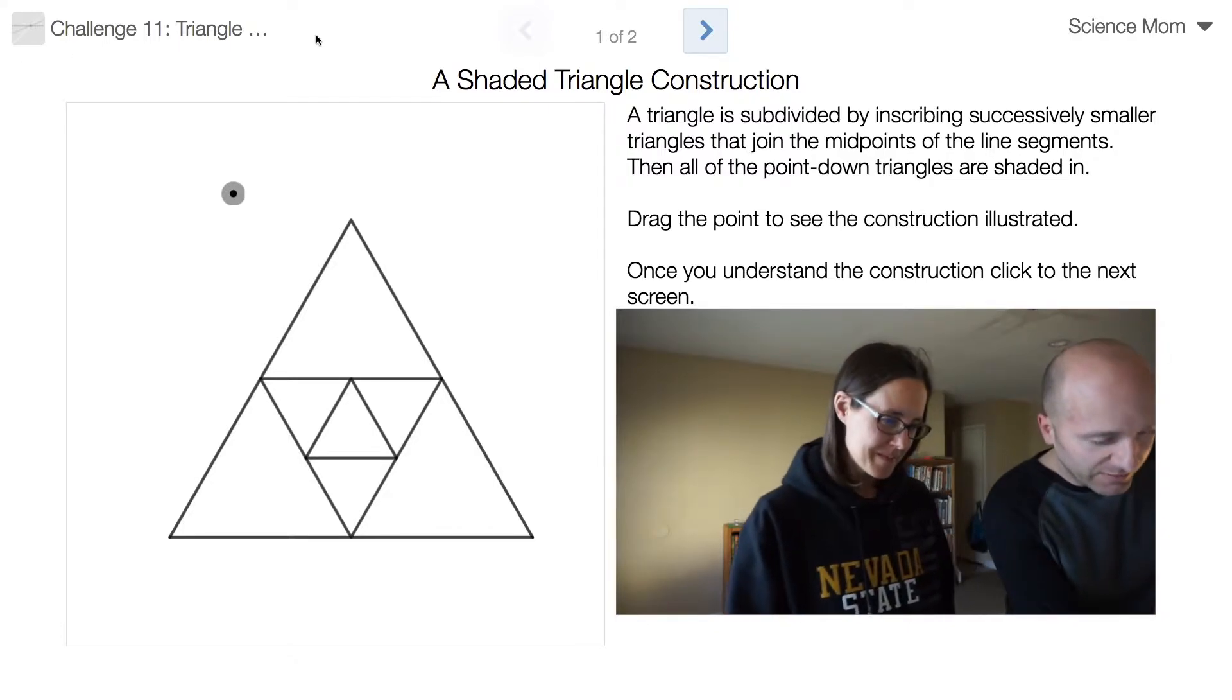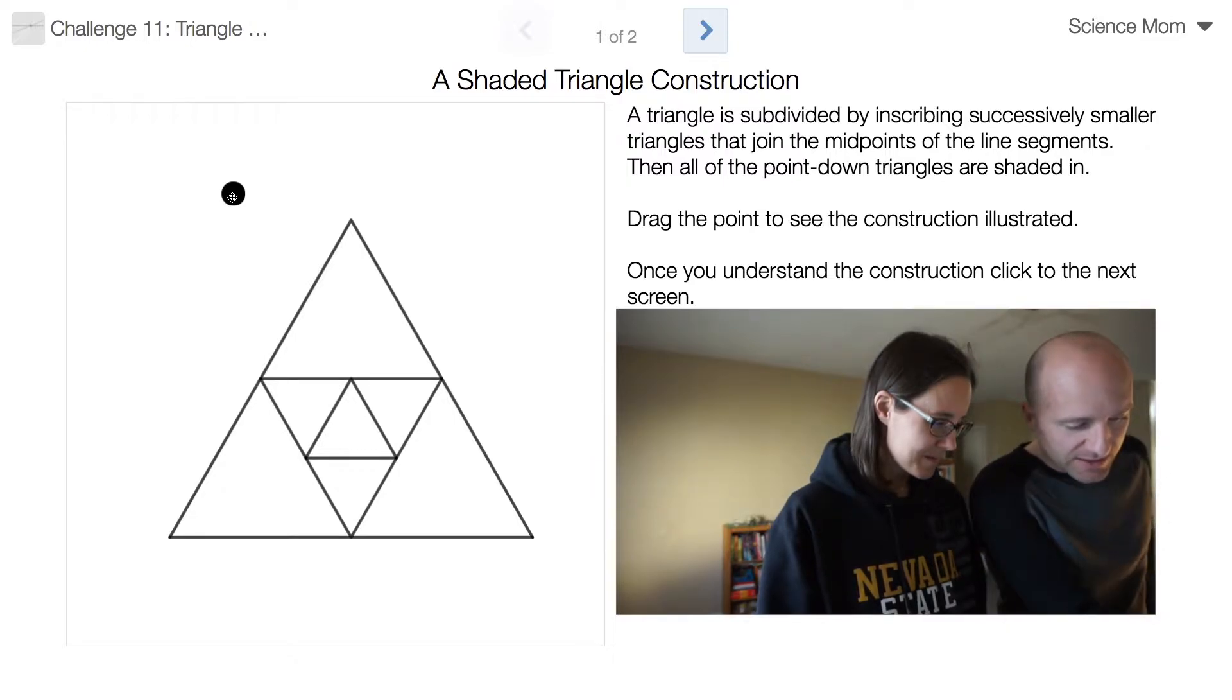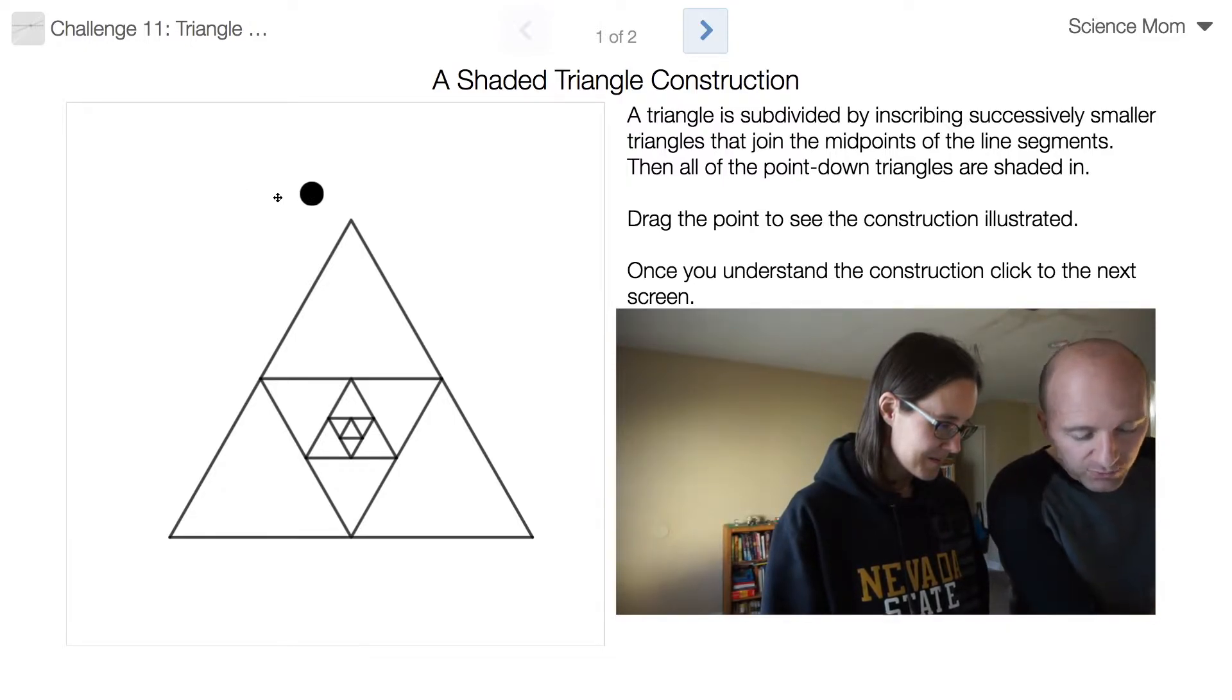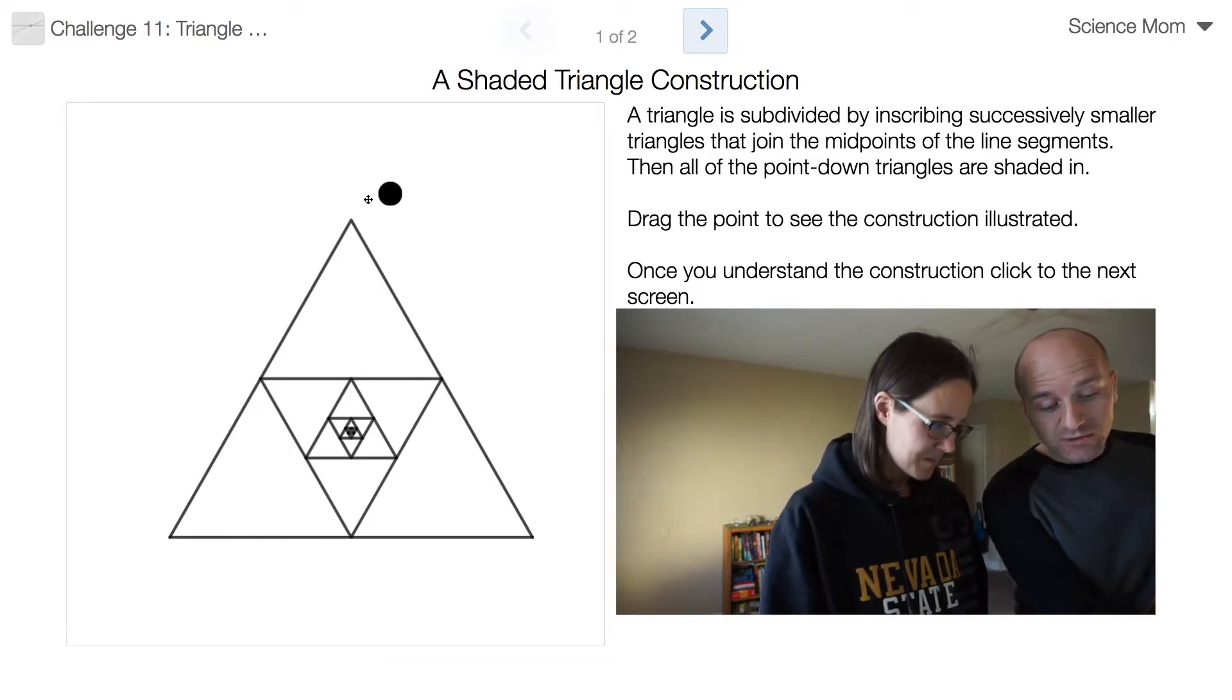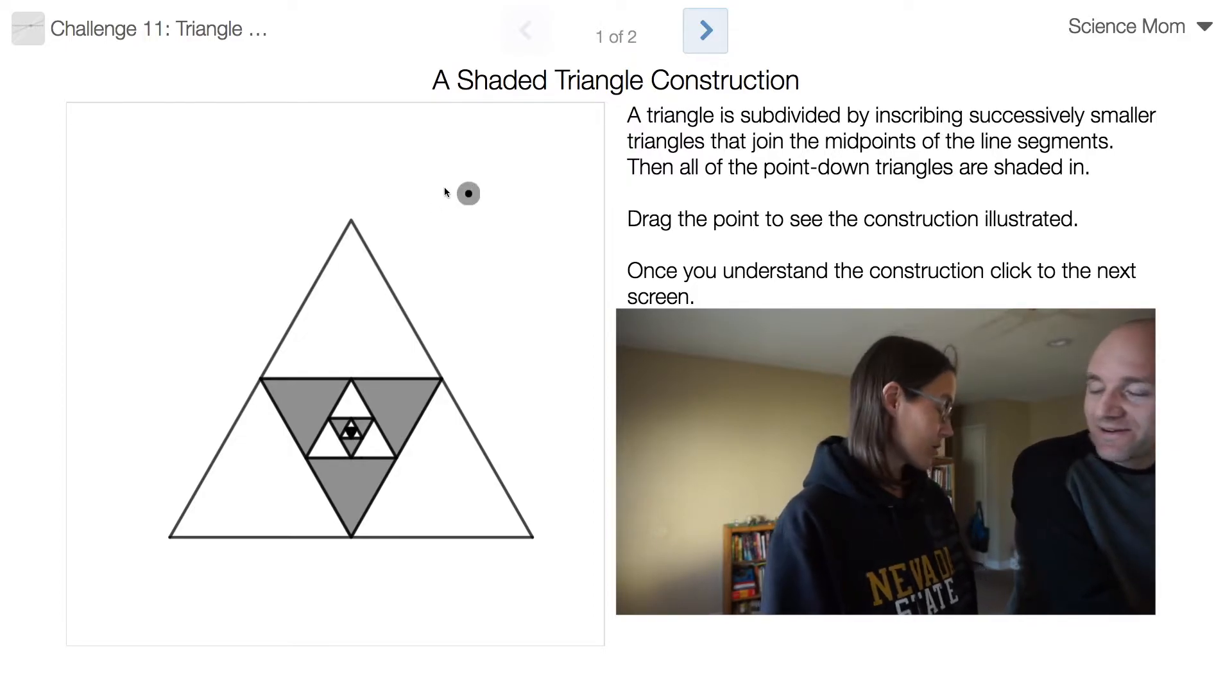In this case, we have an equilateral triangle, and we put an upside down triangle inside it, point down, and we repeat this process over and over, getting a sequence of triangles kind of spiraling inwards. And then in the end, we shade all of the point down triangles. And the question is, what portion is shaded?